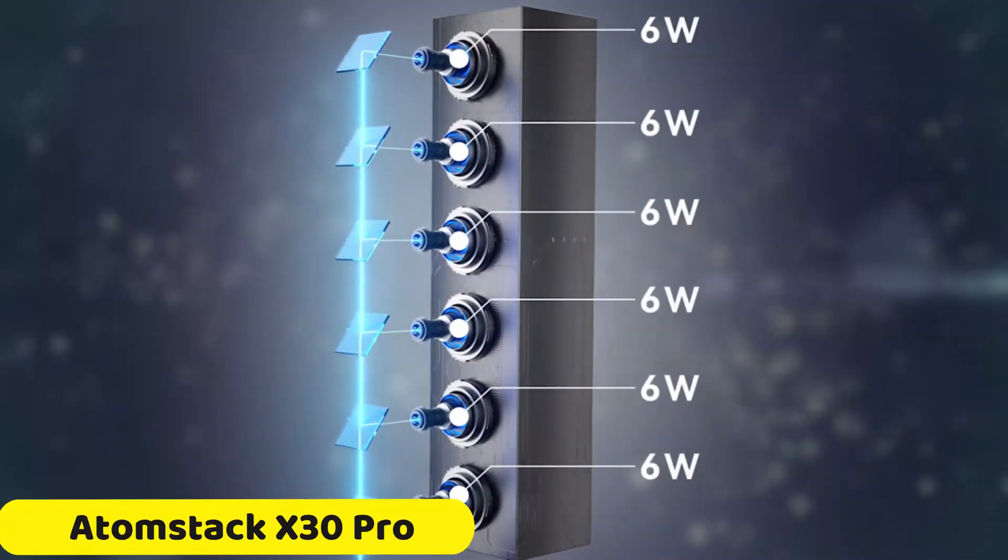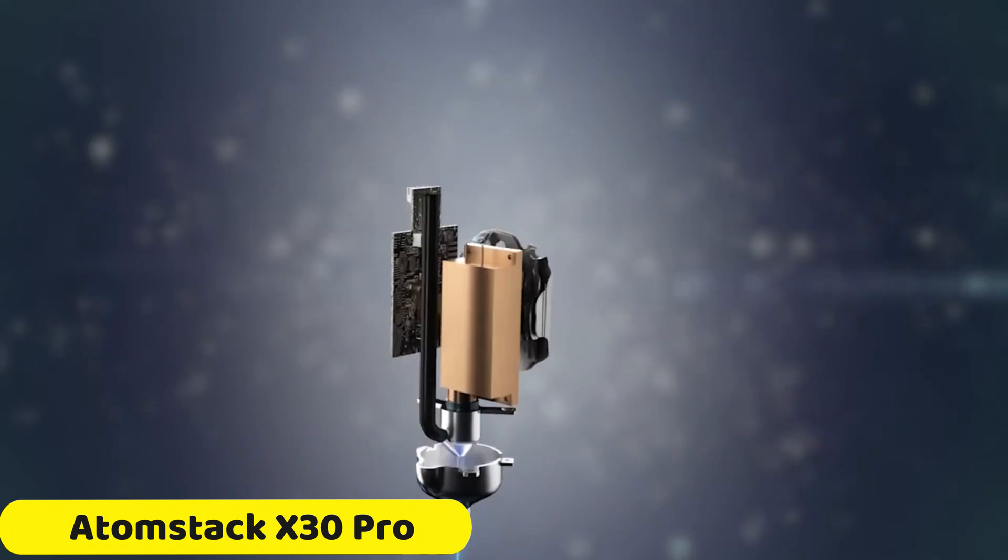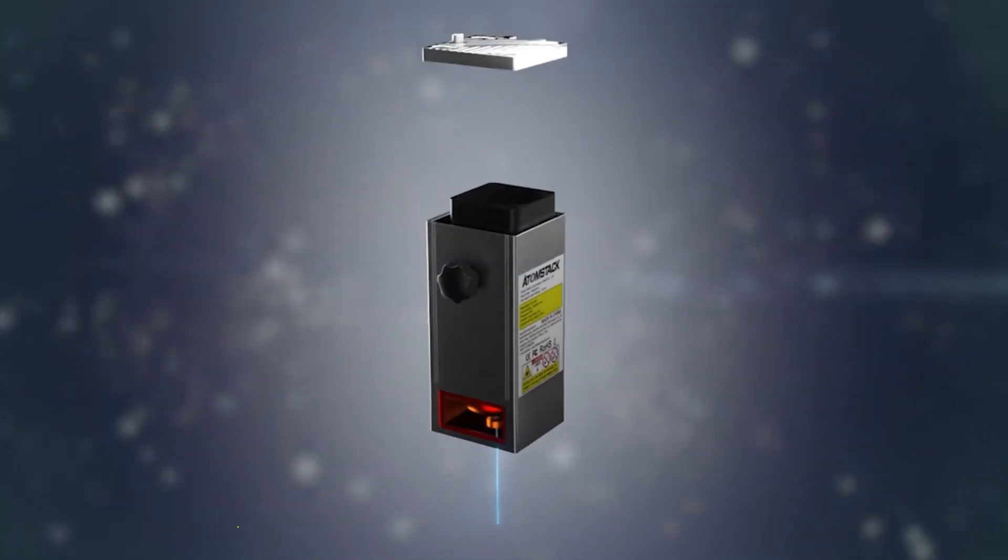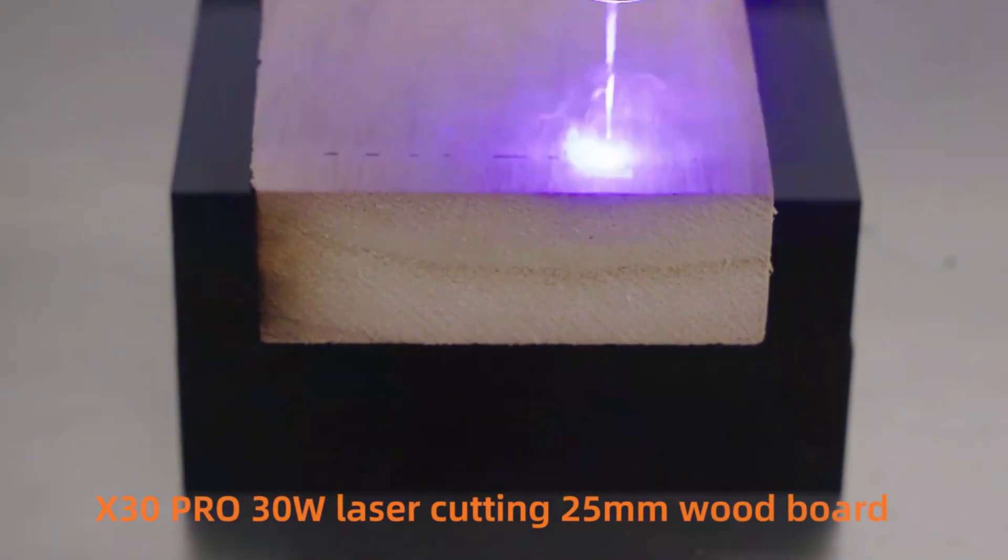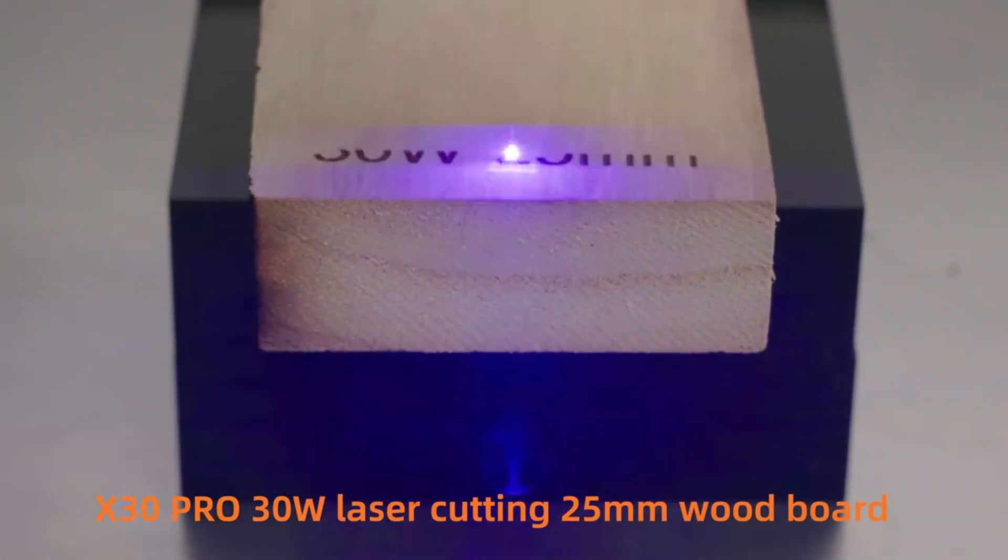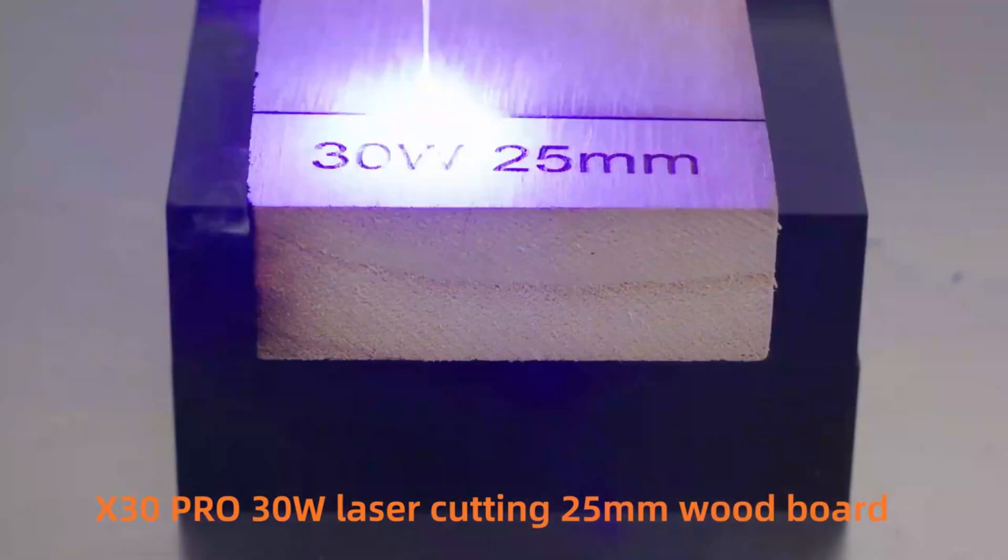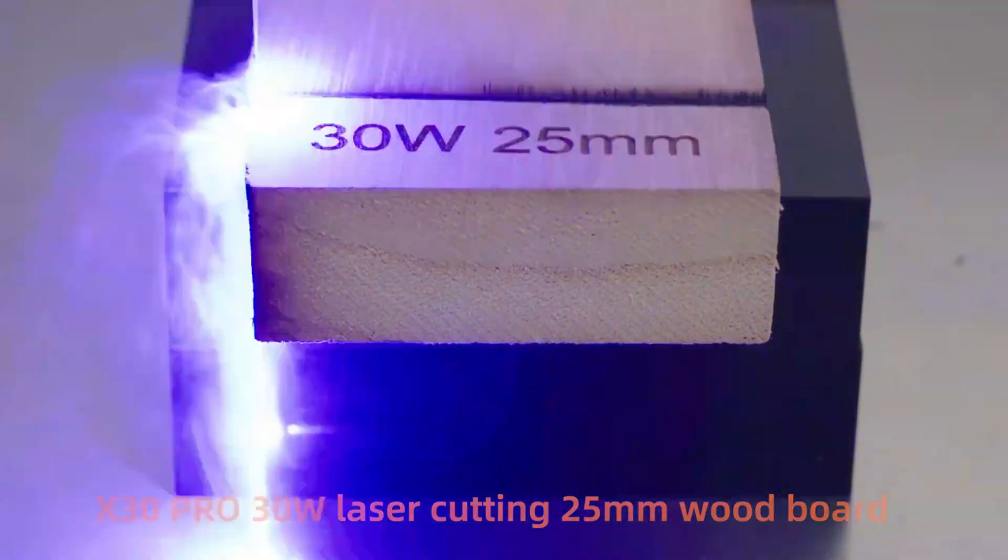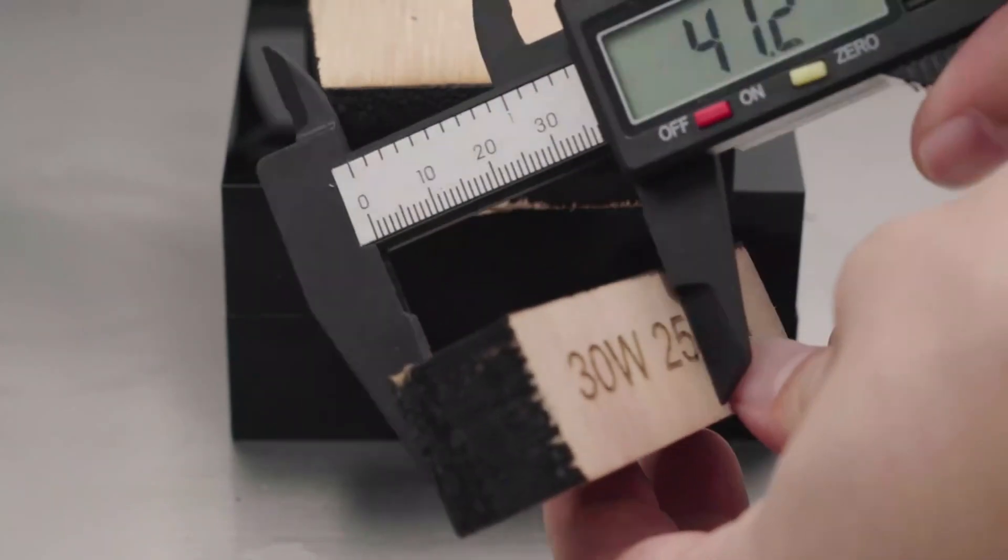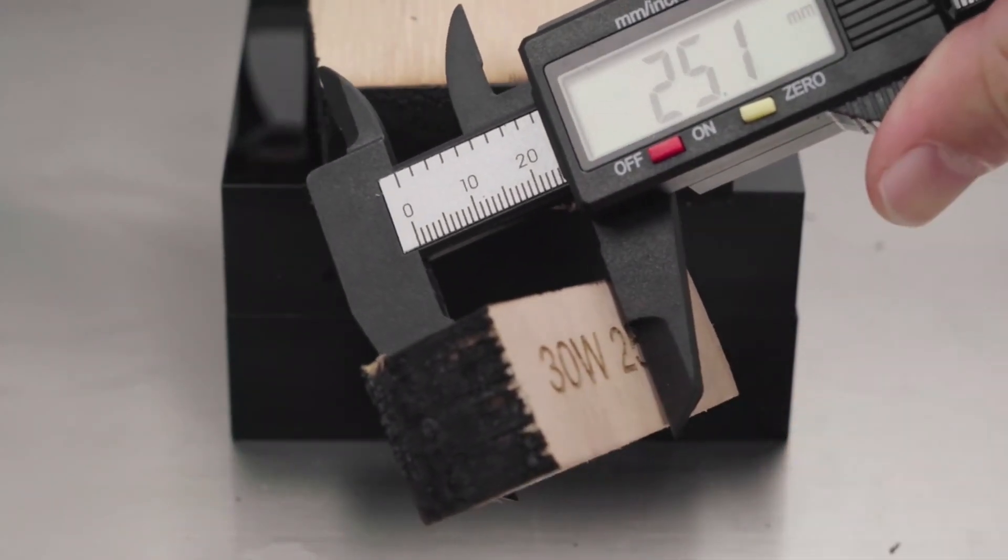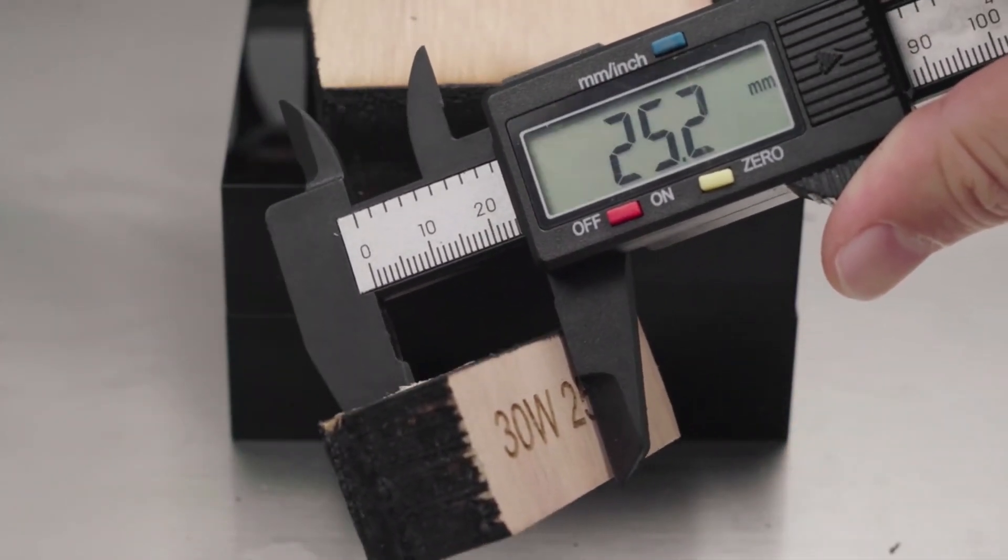Number 3. Atomstack X30 Pro Laser Engraver. The Atomstack X30 Pro Laser Engraver is a revolutionary tool for engraving and cutting various materials. It boasts a super-high 36W optical power, allowing it to cut up to 40mm thick wood and black acrylic in a single operation. The machine also offers high-speed engraving, with a 200% increase in cutting speed compared to 10W, and a 50% increase compared to 20W machines.